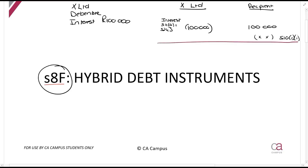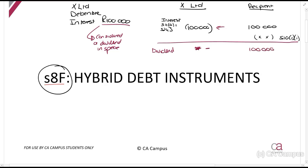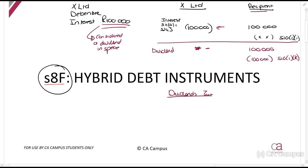If Section 8F applies, they tell you that the interest is considered a dividend in specie. That means when X Limited pays it, since it's now a dividend rather than interest, they cannot claim a deduction. The recipient will receive R100,000 as a dividend, which will be exempt under Section 10(1)(k). There will then be dividends tax to consider, calculated based on whether the recipient has issued a declaration that they are not liable for it.